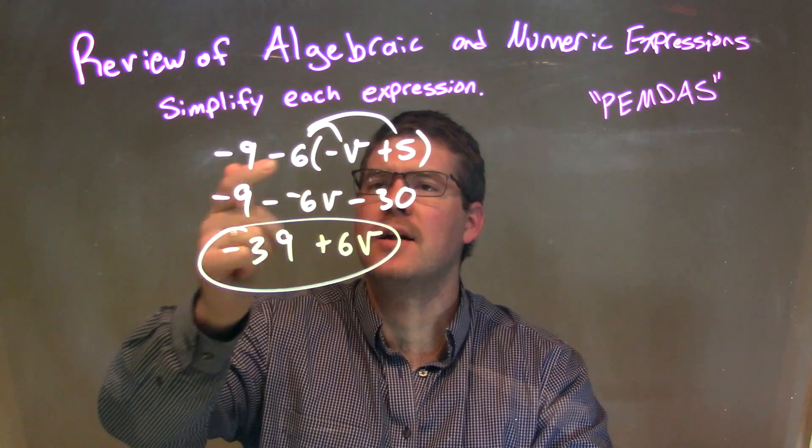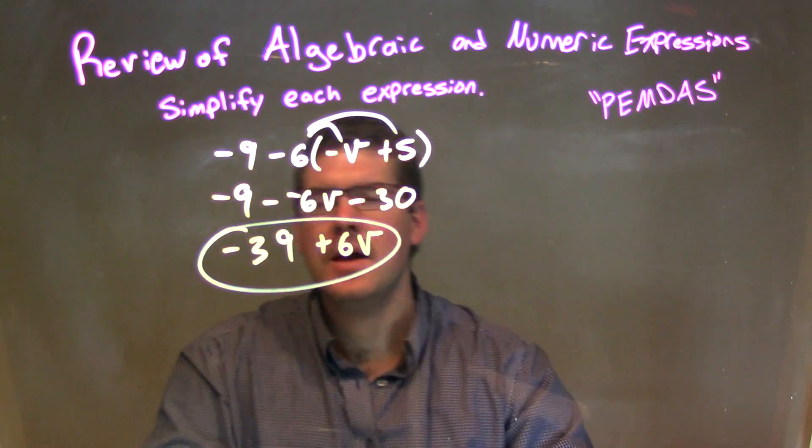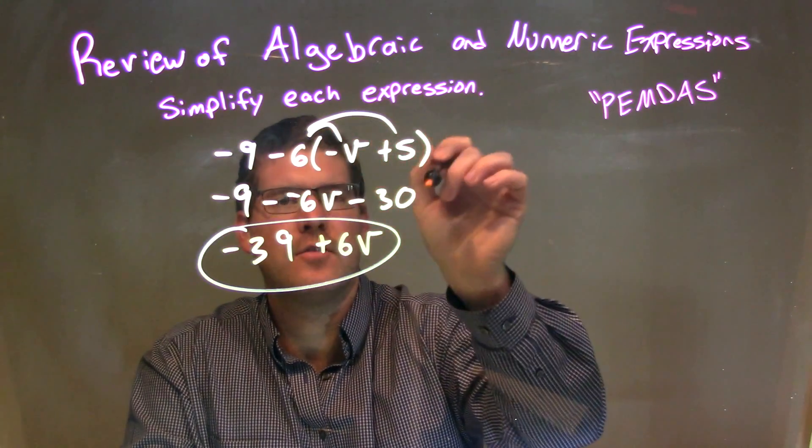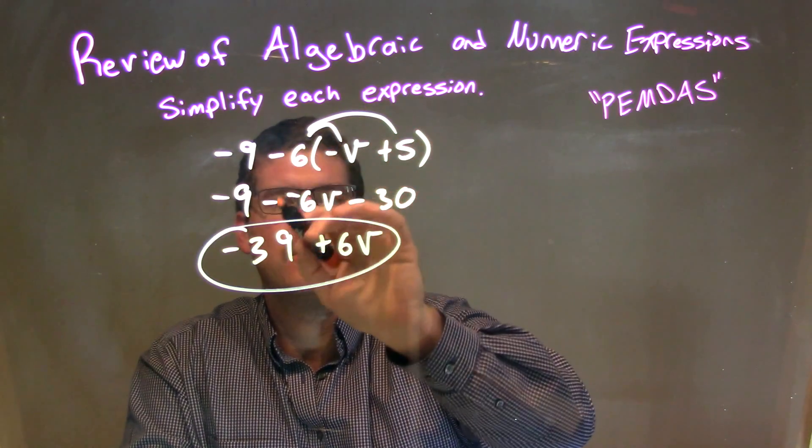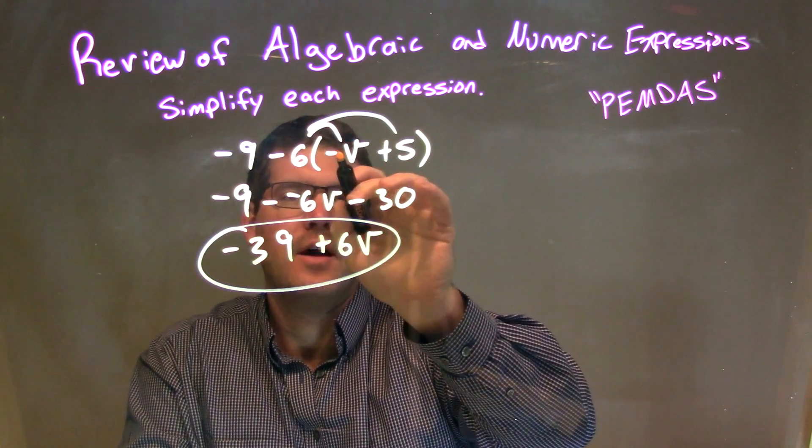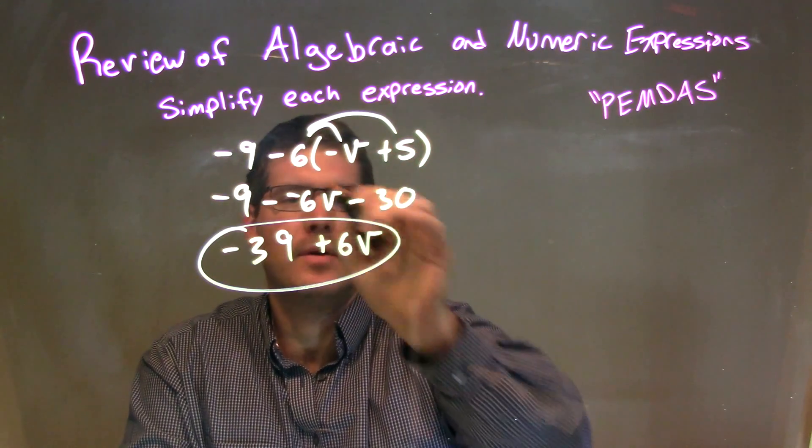So, let's recap. We're given negative 9 minus 6 times the parenthesis negative v plus 5. I see the multiplication going on. So, I distribute the negative 6 across both parts. We're subtracting a negative 6v right here. Negative 6 times a negative v results in negative 6v. And 6 times 5 is 30, but we have the subtraction there.